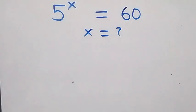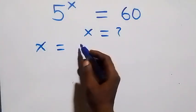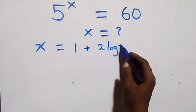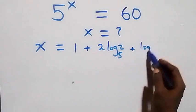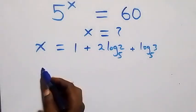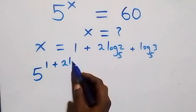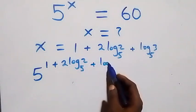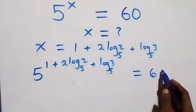We substitute x equals 1 plus 2·log₅2 plus log₅3 back into the equation, giving 5 raised to the power (1 + 2·log₅2 + log₅3) equals 60.